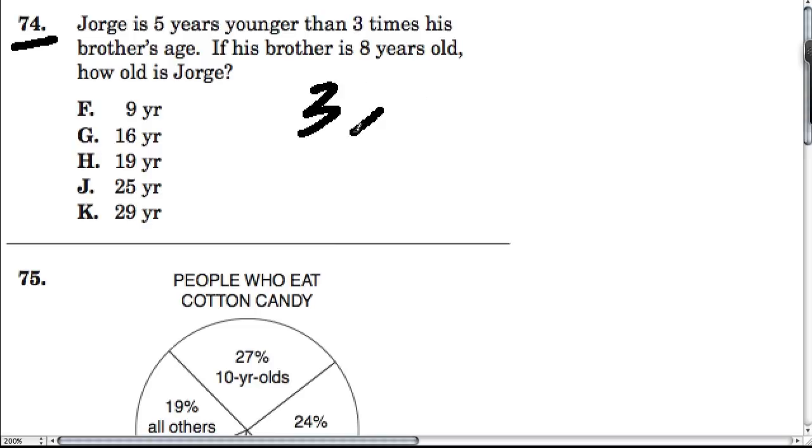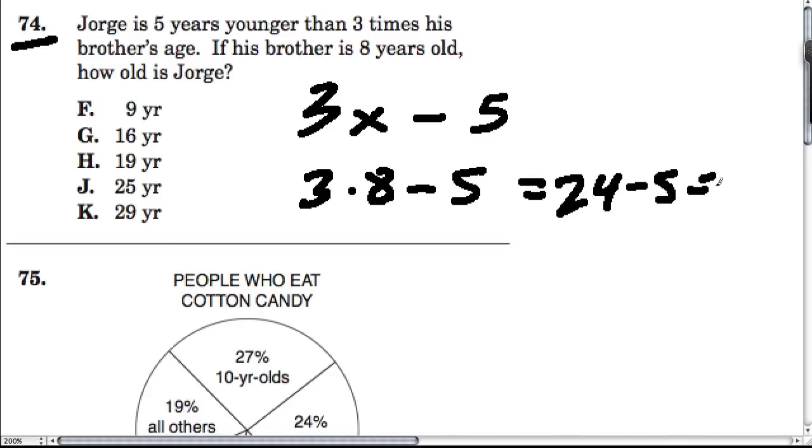So we don't know what his brother's age is, but it's 5 less than 3 times his brother's age. So if the brother's age, x, is 8, we have 3 times 8 minus 5, which is 24 minus 5, or 19.